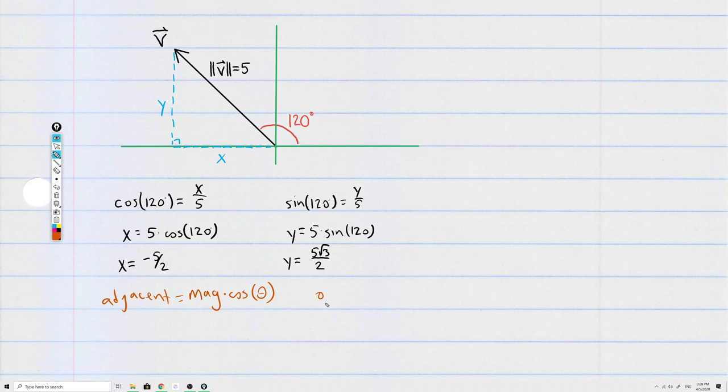And then the opposite side is the magnitude of the vector times the sine of the angle. If you're doing a whole lot of work with vectors, just having this memorized, that adjacent side is magnitude times cosine, opposite side is magnitude times sine. These are worth knowing.